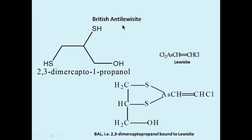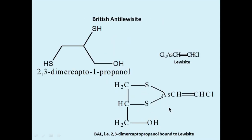Next is British Anti-Lewisite (BAL), which was precisely the first chelating agent used against metal poisoning. During World War, a poisonous gas lewisite was released, and the arsenic of lewisite bound with the sulfur of many important enzymes and proteins. BAL — British Anti-Lewisite — was named because it acted against the gas lewisite. It is 2,3-dimercapto-1-propanol. The ligand BAL is able to bind arsenic from lewisite via its two mercapto (sulfur) sites, and in this way the complex of BAL with arsenic is removed from the body.